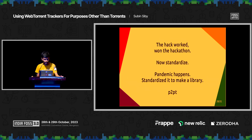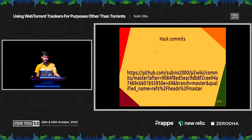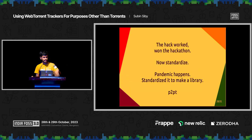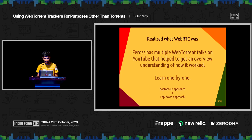I have two minutes left. The hack worked and won the hackathon, and then the pandemic happened right after — the hackathon was in February and the pandemic hit in March. I had lots of free time in college, so I thought: let's make it a proper library. The original project was to make a decentralized proxy to access Wikipedia. At the time, Kashmir had an internet block after Article 370 was revoked. How do students access Wikipedia when sites are all blocked? That's a good problem — how do you make a decentralized proxy? That's how P2PT was made.